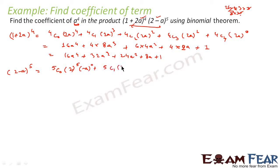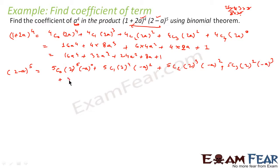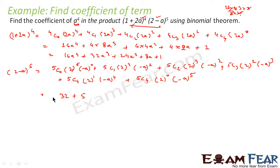Continuing, we decrease the power of 2 and increase the power of (−a) at each step: 5C2·2³·(−a)² + 5C3·2²·(−a)³ + 5C4·2¹·(−a)⁴ + 5C5·(−a)⁵. Now 5C0 is 1, so 2⁵ = 32. Then 5C1 is 5, and 2⁴ is 16, with (−a)¹ = −a, giving −80a.